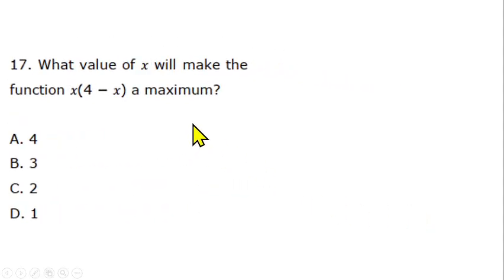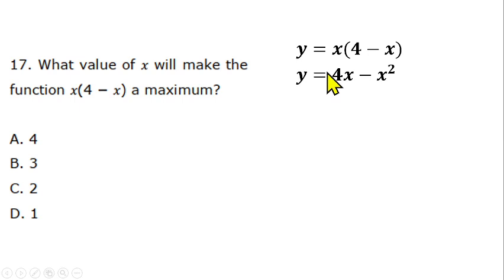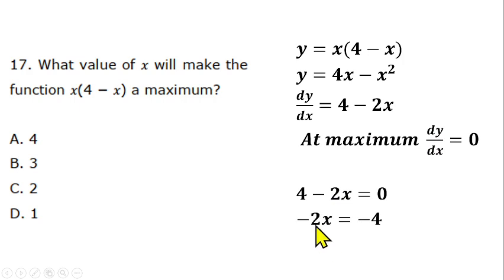Question 17 is from differential calculus. Find the value of x that makes f(x) = x(4 minus x) a maximum. Setting y = x(4 minus x) = 4x minus x², differentiate: dy/dx = 4 minus 2x. At maximum, dy/dx = 0, so 4 minus 2x = 0, giving x = 2. Option C is correct.